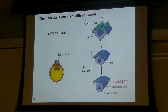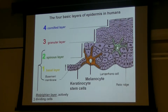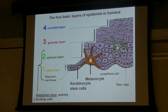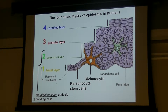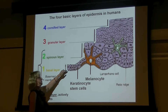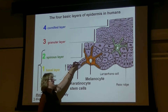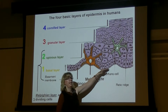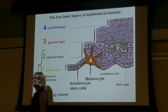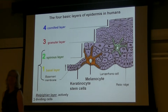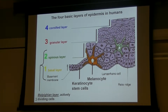Looking first at the skin or the epidermis in humans, this has several distinct layers to it — four of them mentioned here on this slide. The very innermost layer is a layer of cells called the basal stem cells, and these would be an example of an adult stem cell.